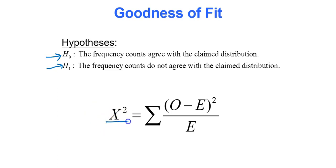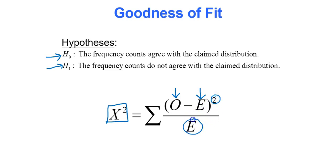The chi-squared test statistic is found by taking the observed frequency and subtracting the expected frequency for each category, squaring that value, dividing by the expected frequency, and then adding up all of those values. We're not going to spend time calculating the test statistic by hand — it's a bit of work but not impossible. Technology is going to calculate it for us.